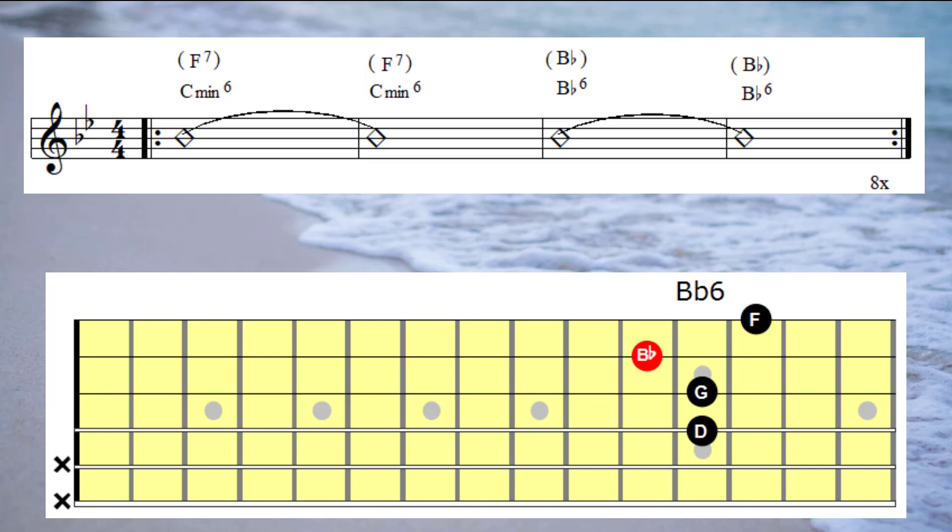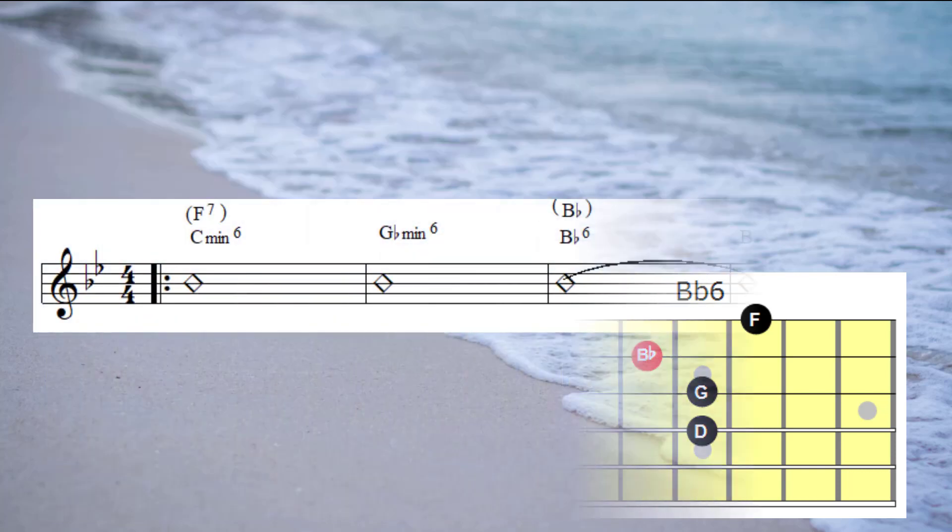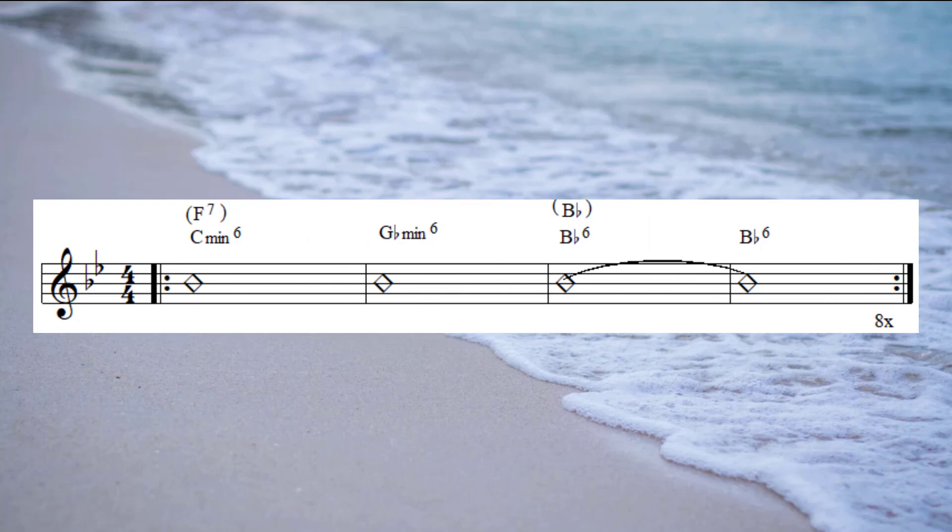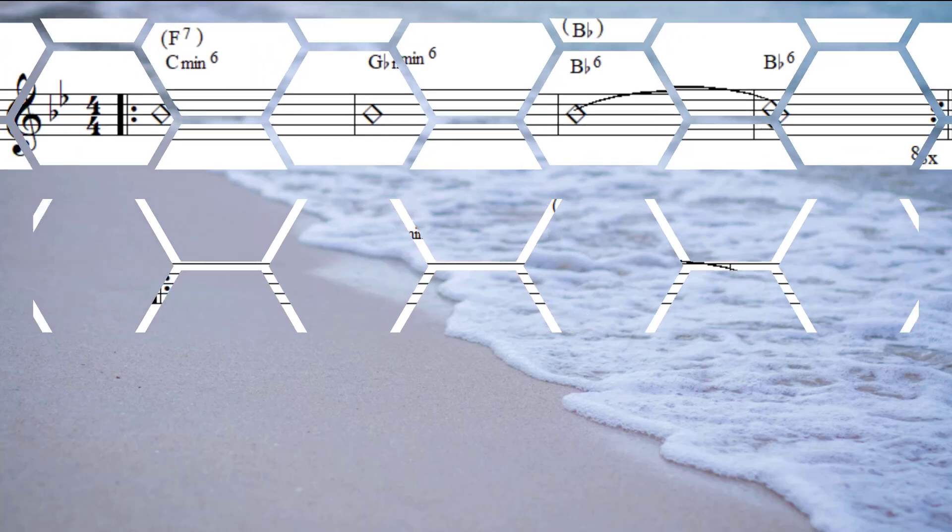And let's have a look at one more example where we'll apply the information that we learnt in today's video. Over the F7 I'll be playing C minor 6 then G flat minor 6 to add extra tension, then moving on to B flat 6. And once again I'll be moving up through all the different inversions of the C minor 6, the G flat minor 6 and then resolving to the B flat 6. Here we go.